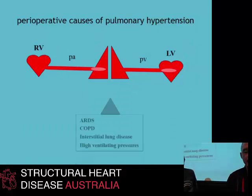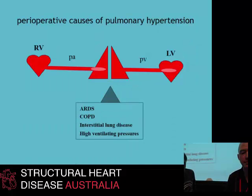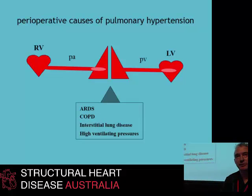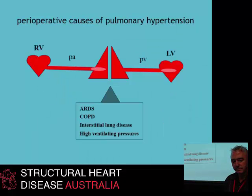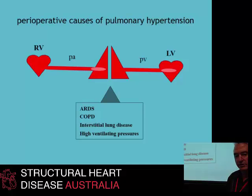Further down the circulation, there are the lung causes of pulmonary hypertension that we see quite commonly in the intensive care environment: patients with severe ARDS, chronic airway disease, interstitial lung disease. The way we ventilate these patients is also very important, because if you use very high inflating pressures, high levels of PEEP, or Valsalva manoeuvres, we can really knock the right ventricle around quite significantly.